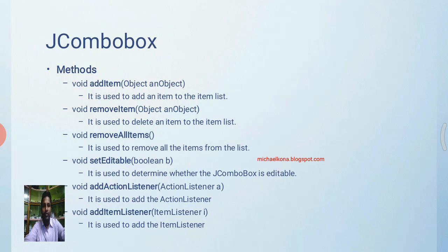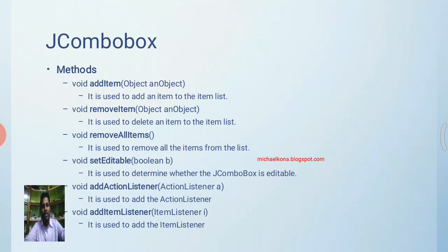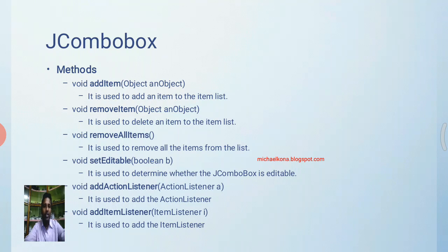If you want to remove all items, use removeAllItems. You can also make a combo box editable or non-editable using the setEditable method — if the argument is true the combo box is editable, if false it is not editable. There are two methods to register the combo box for events: addActionListener for action events, and addItemListener for item events. Both item events and action events can be performed on a combo box.